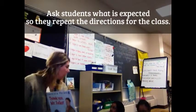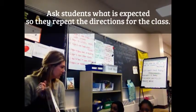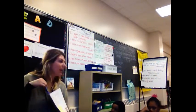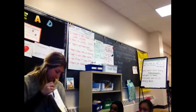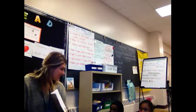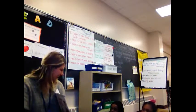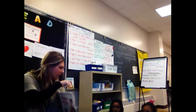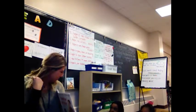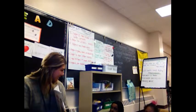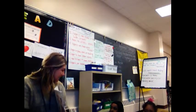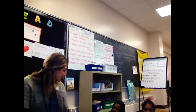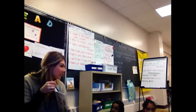Every time you come to a word you don't know, what are you going to do? Look at the pictures. Where else could we look? The words. What if there's a sentence and you get what the sentence is saying, but you don't understand that one word? Could you look around the word and see if there are some words you do know? Do you want to know what that's called? Using context clues. When you use context clues, you're looking at the words around it to help you figure it out.